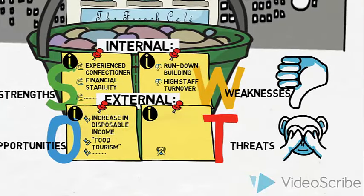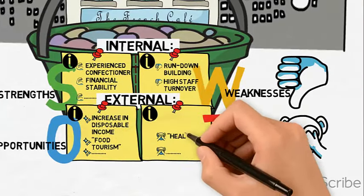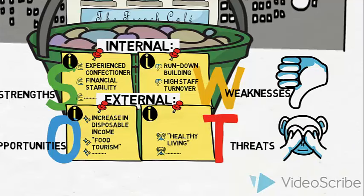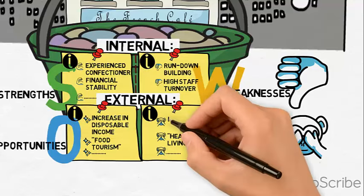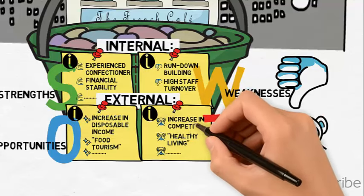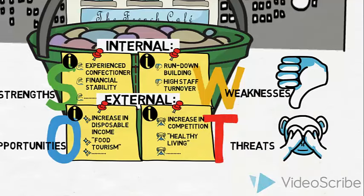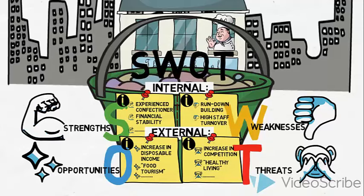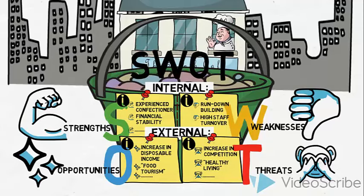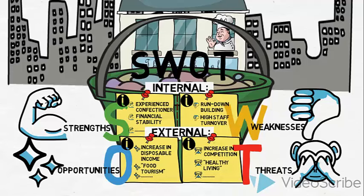And threats — these are things that could have a negative impact on us. Some of the threats revealed are an increased focus on healthy living, which could be a threat considering the high fat and sugar content in the French Café's products. And locally, competition has increased considerably, with many new restaurants and cafés opening up. Many more strengths and weaknesses, opportunities and threats should be included in the SWOT, but for the purpose of this video we will deal with just these few to serve as an example.